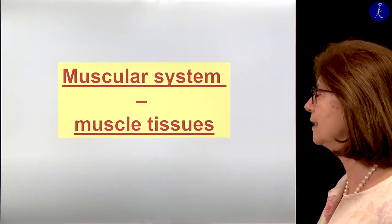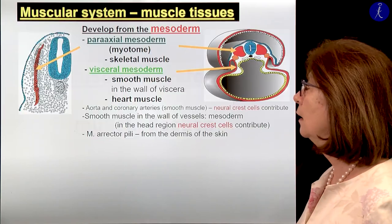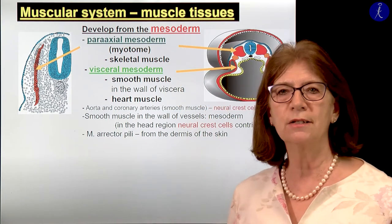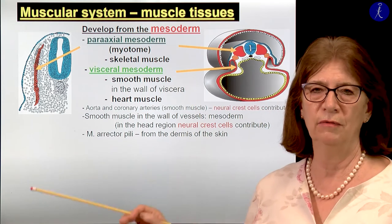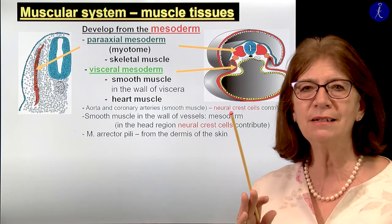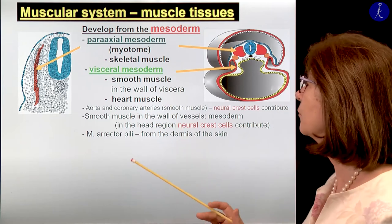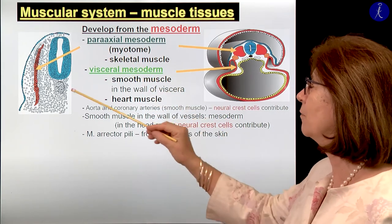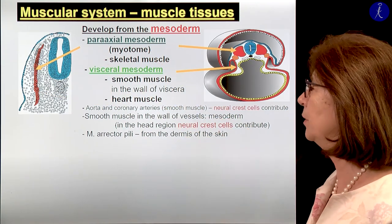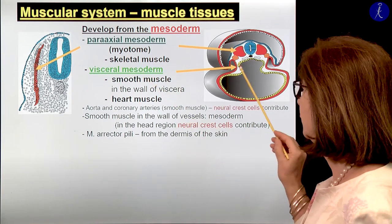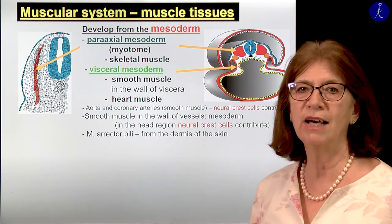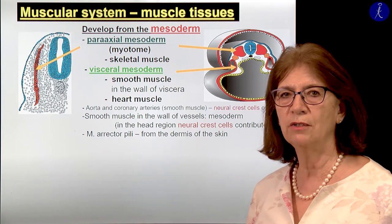Now we will talk about the muscular system and muscle tissues. All muscles develop from the mesoderm — this is the basic rule, with some small exceptions. From the paraxial mesoderm we have the myotome cells; all skeletal muscles come from the myotome. From the visceral mesoderm you have the smooth muscle in the wall of the viscera. You also have the heart muscle derived from this visceral layer of the lateral plate mesoderm. Interestingly, the heart muscle is also striated, like skeletal muscle, so although they come from different mesoderm origins, histologically they are similar.